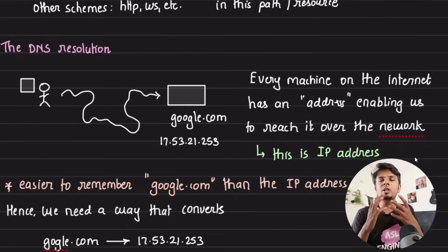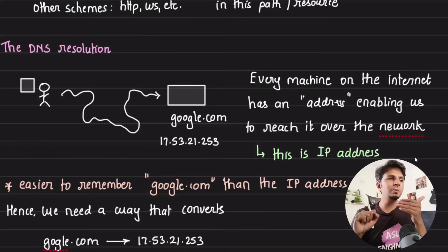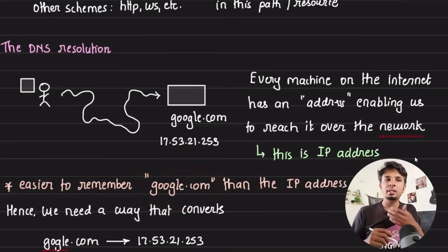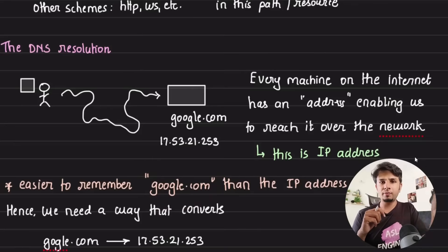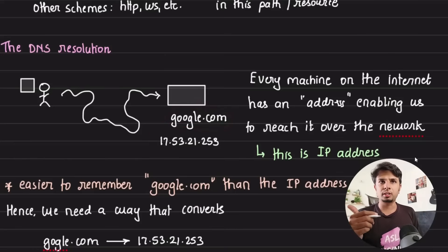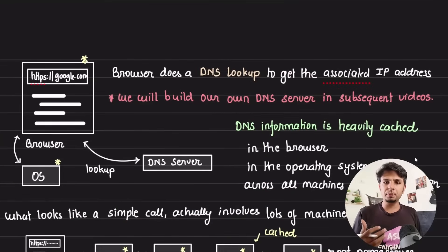When you type this URL in your browser, the first thing that happens is DNS resolution. Why do we need DNS resolution? For one machine to connect to any other machine, we require an IP address. But we cannot possibly remember something like 17.53.21.253 — it is much easier to remember google.com. Domain names were introduced to make it easier to remember addresses like Twitter, Facebook, LinkedIn, and others. The process of converting a domain name to an IP address is called DNS resolution.